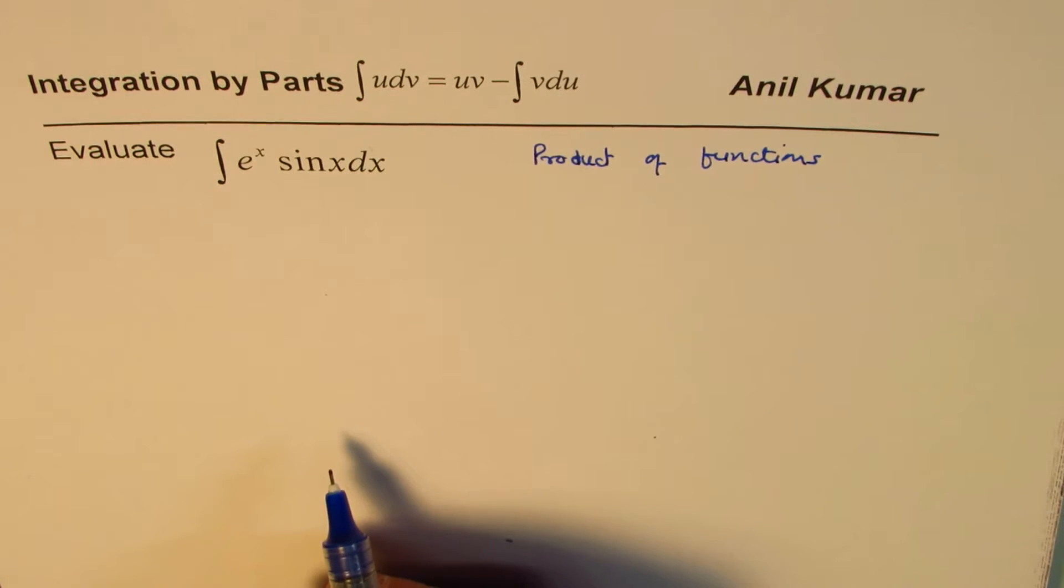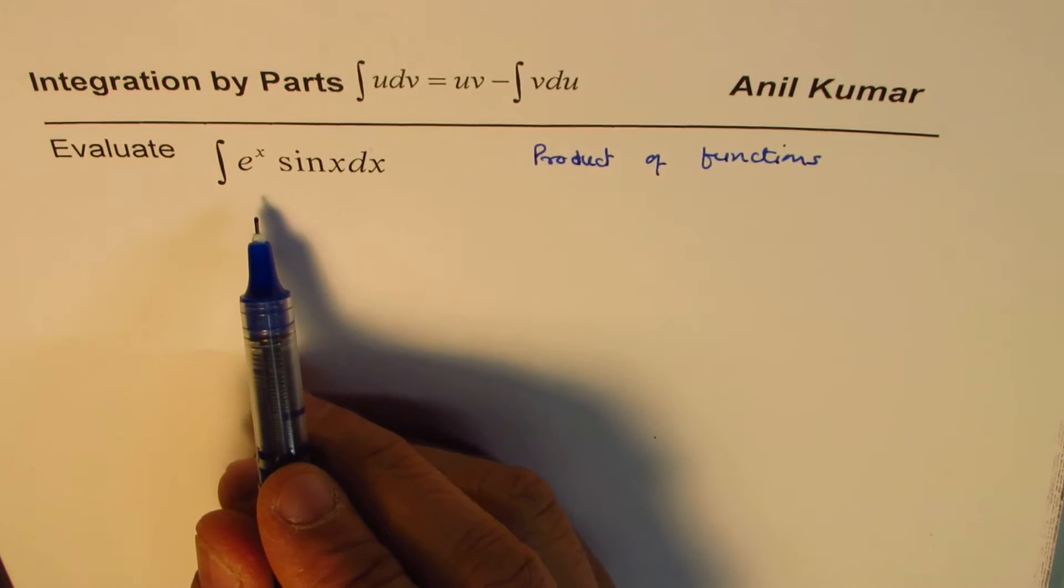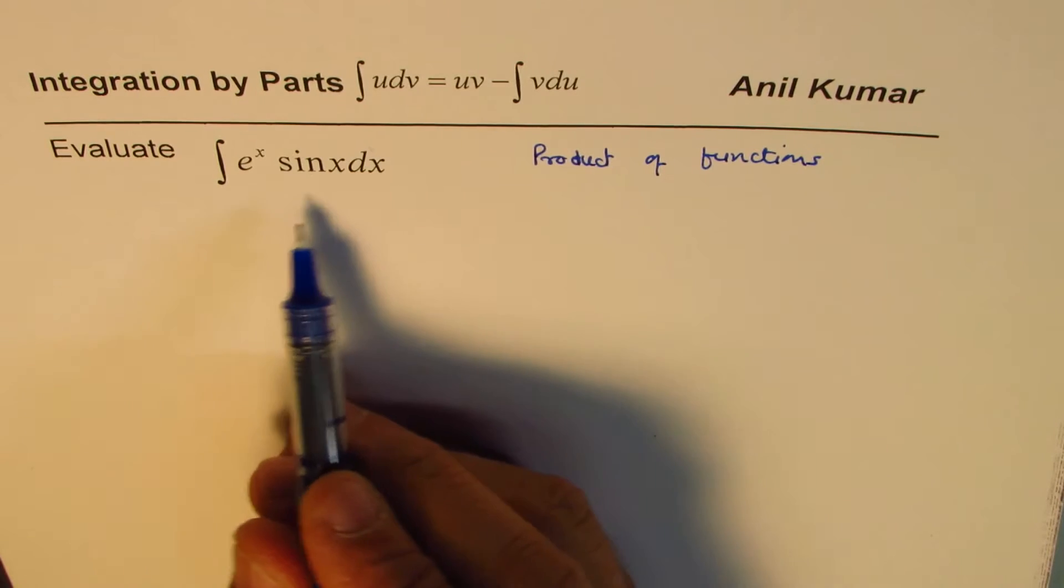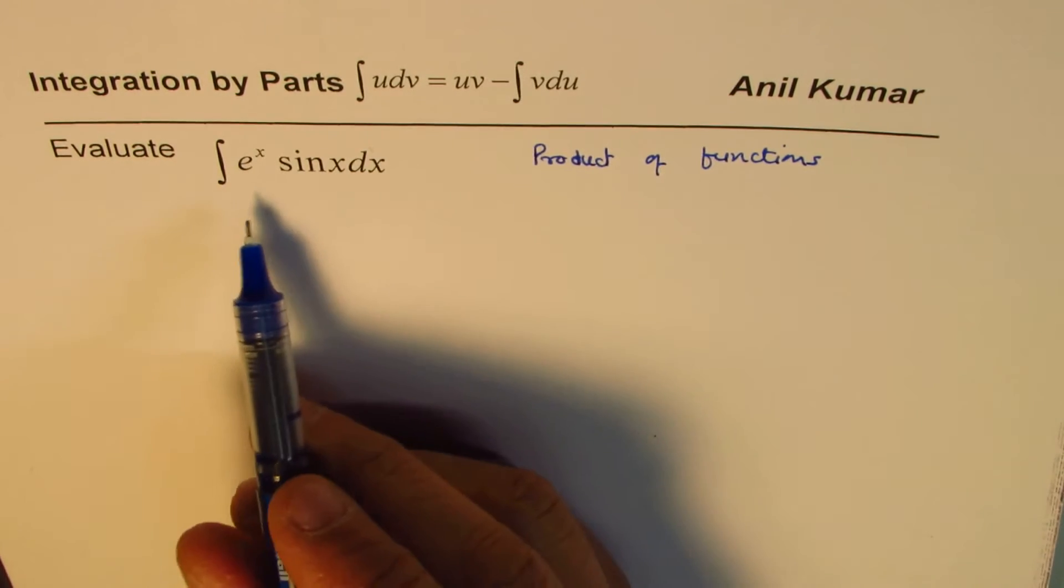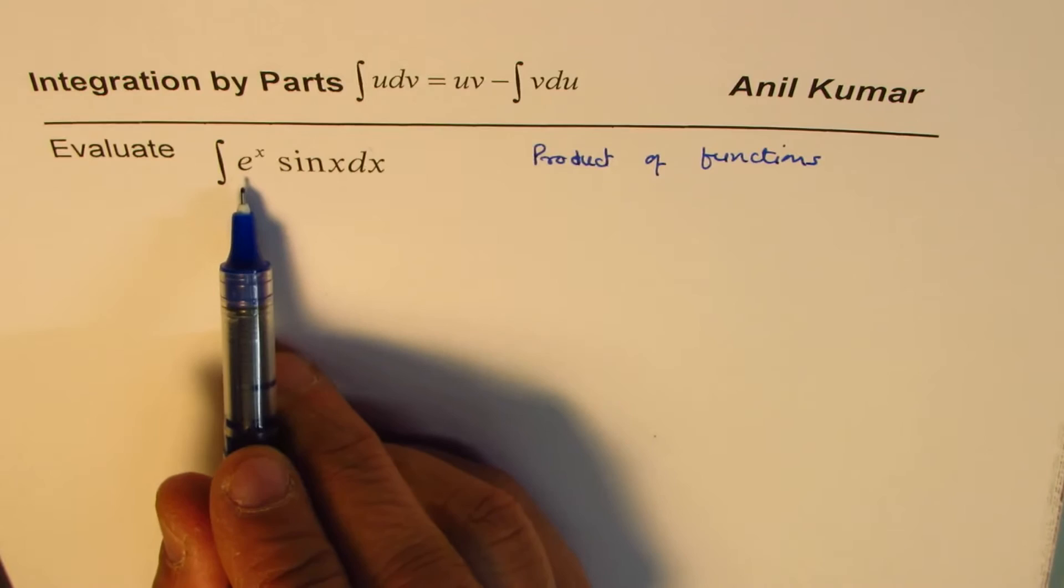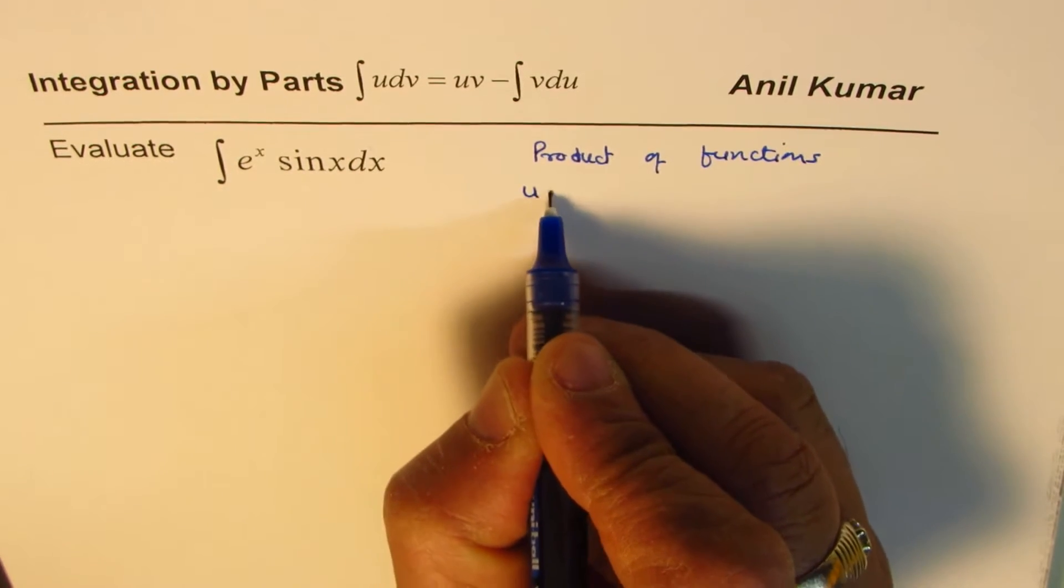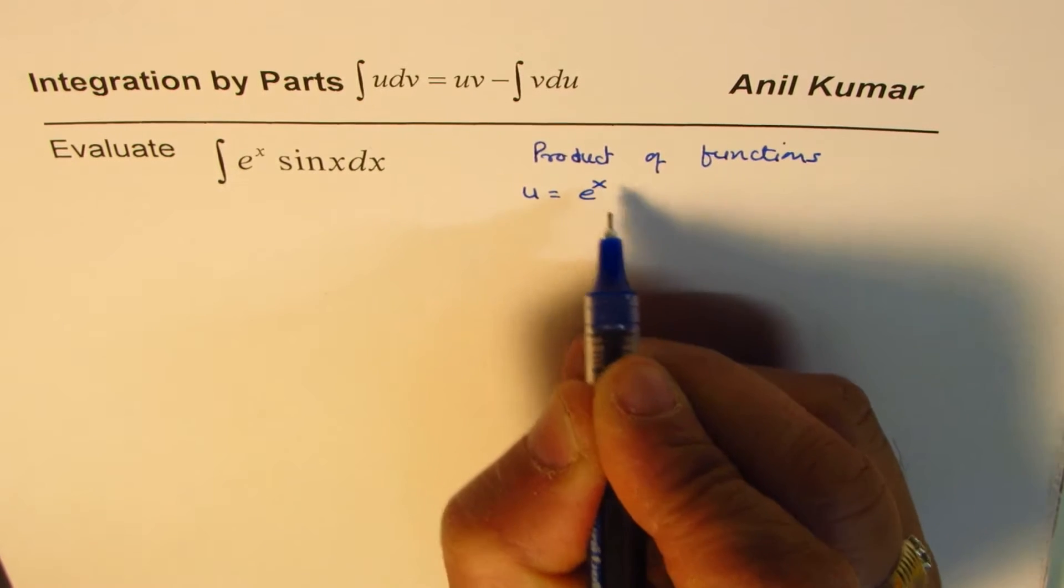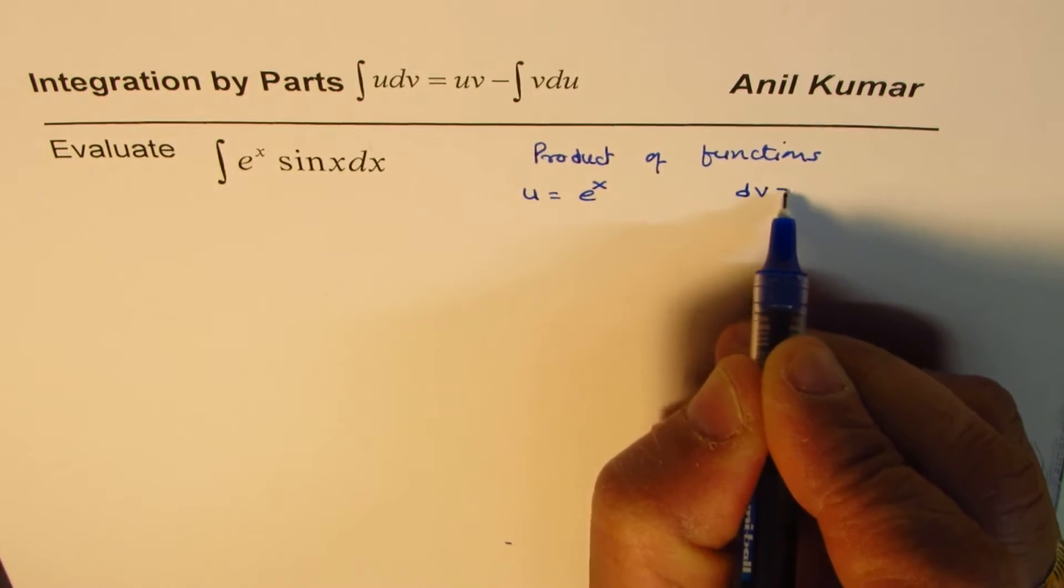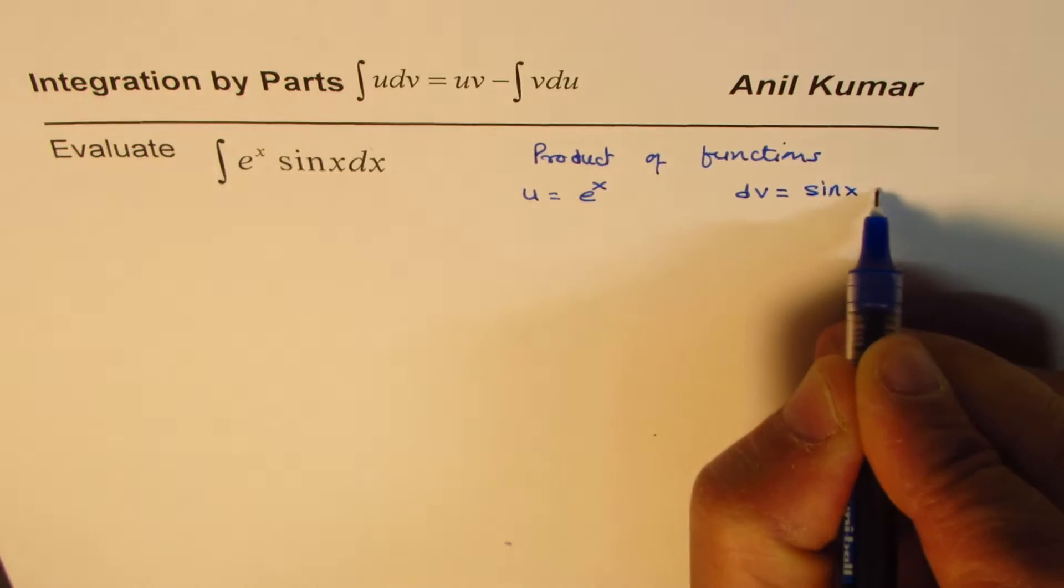When the choice is between exponential and trigonometric functions, either can work. Both can work. So let's take e to the power of x as u, and we'll take dv as sine x dx.